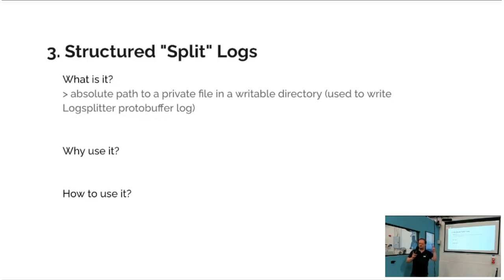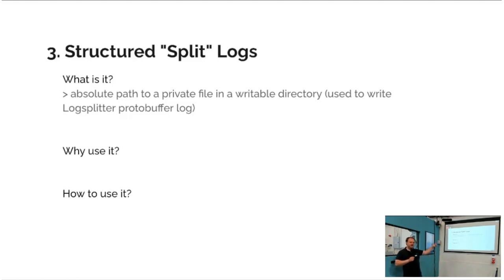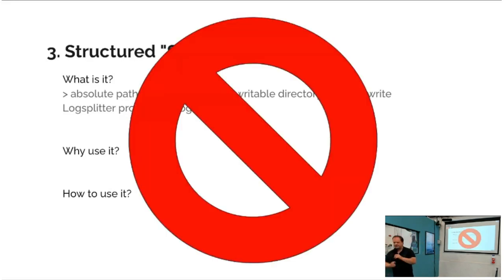Structured split logs: according to the documentation, this is an absolute path to a private file in a writable directory where you can write a log-splitter protobuffer log file. Unfortunately I couldn't find the proto file — I think it's not open source — and Bazel doesn't do anything with this either. I believe the idea is to split log output by individual test case when your test executable runs many test cases, so you can associate each part of the log to the specific test case that was running. Except it doesn't work — sorry.